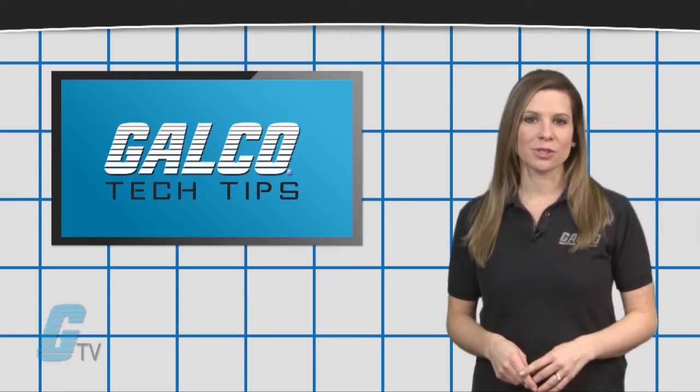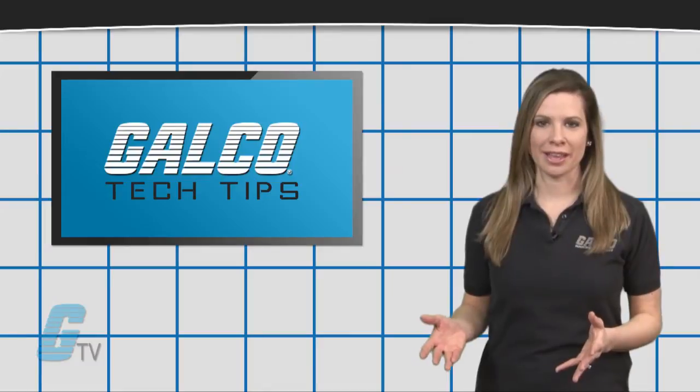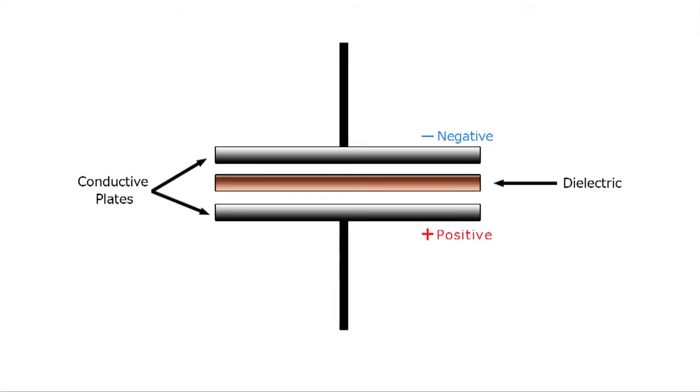How the two are able to accomplish this function differ greatly. Capacitors store an electrical charge by creating an electrical field with two conductors and a non-conductive material called a dielectric placed in between them.